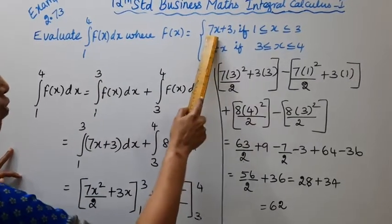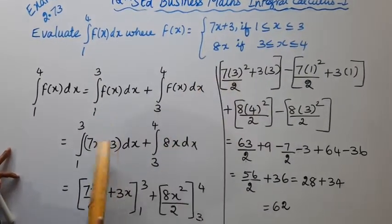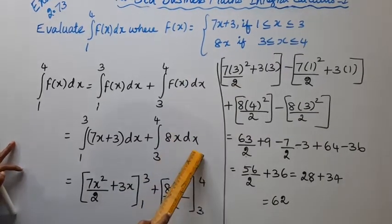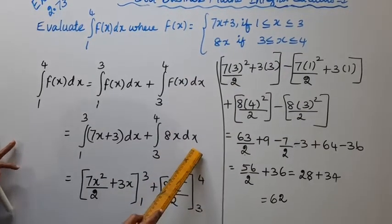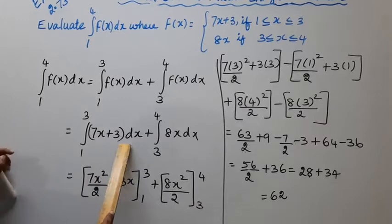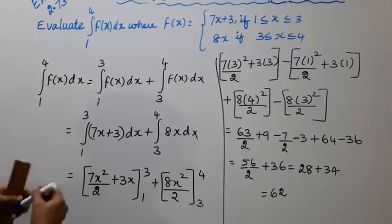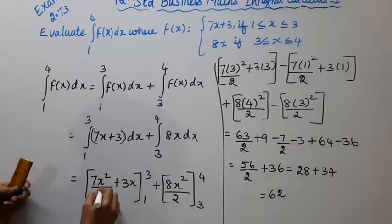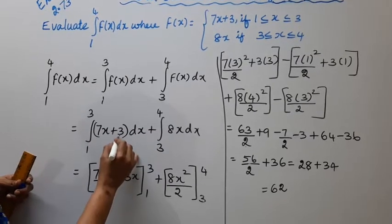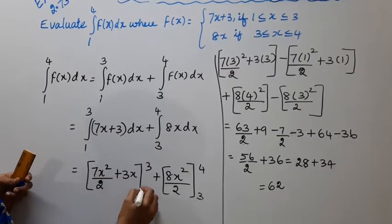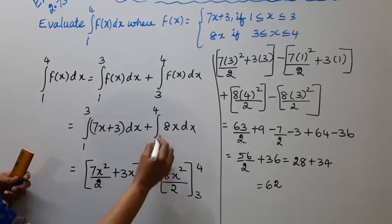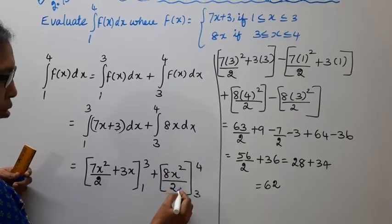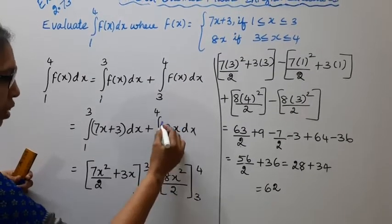From 1 to 3, f(x) equals 7x plus 3, so we integrate 7x plus 3 dx. From 3 to 4, we integrate 8x dx. Integrating 7x plus 3 gives 7x² by 2 plus 3x, with limits 1 to 3. Integrating 8x gives 8x² by 2, with limits 3 to 4.